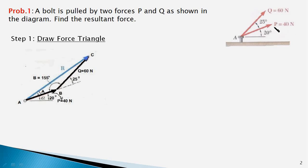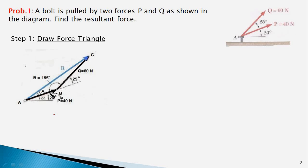Since the force vector P makes an angle of 20 degrees with the horizontal, we draw a line AB which represents force P at an angle of 20 degrees with the horizontal. Since force Q makes an angle of 25 degrees with respect to P, we draw another line BC which is at 25 degrees with respect to the line of action of force P. The side AC then represents the resultant R. We know the two sides AB and BC of triangle ABC and we know the included angle B.